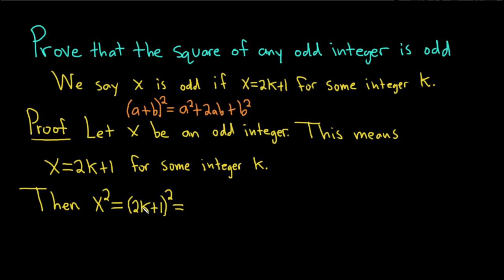So here we square the 2k, so that will give us 4k squared. Then you multiply the 1 and the 2k and double it. So 1 times 2k is 2k, times 2 is 4k. And then you square the 1, so you get 1.